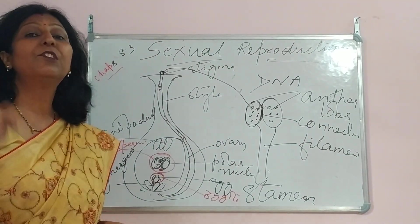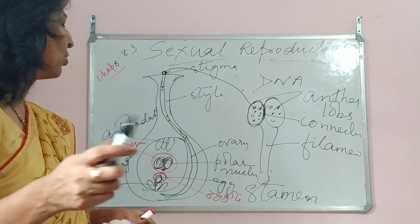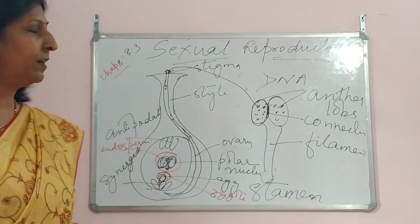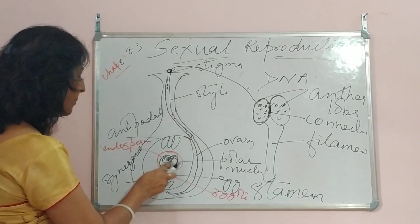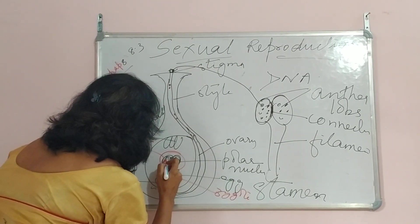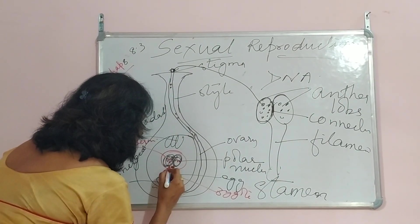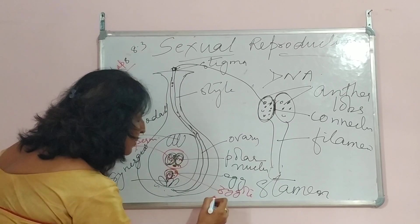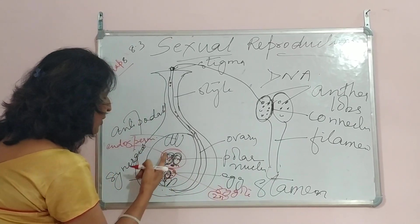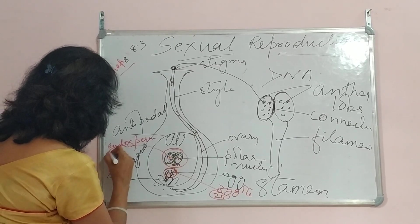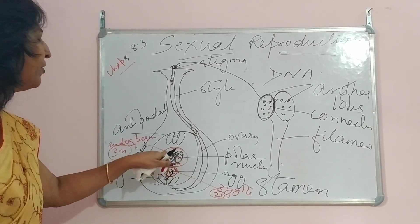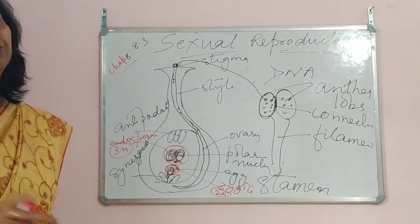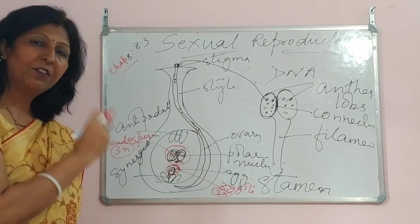One more thing — what is triploid fusion? Triploid fusion is the same as the formation of endosperm. The polar nuclei have N number of chromosomes, each polar nucleus has N, and the male nuclei also has N. The egg has N and the zygote has 2N chromosomes. The complete endosperm has 3N. So fusion involving 2N from the polar nuclei and 1N of the male nucleus gives rise to 3N endosperm. This is what is known as triploid fusion.